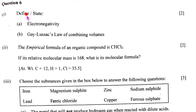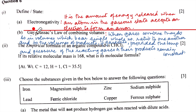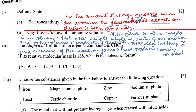Question 6, part one: define electronegativity and Gay-Lussac's law of combining volumes. Electronegativity is the amount of energy released when an atom in the gaseous state accepts an electron to form an anion. Gay-Lussac's law: when gases combine, they do so in volumes which bear a simple whole-number ratio to one another and to the volumes of products if gaseous, provided temperature and pressure remain constant.